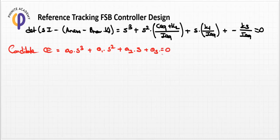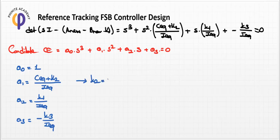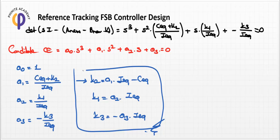We equalize the two expressions to obtain the solution. a_0 must equal one. Then: a_1 equals (c_x + k2)/I_x, a_2 equals k1/I_x, and a_3 equals minus k3/I_x. Solving for the gains: k2 equals a_1*I_x minus c_x, k1 equals a_2*I_x, and k3 equals minus a_3*I_x. This is our solution for the full state feedback controller design with reference tracking.